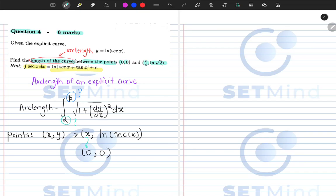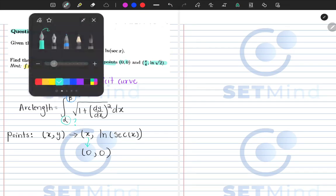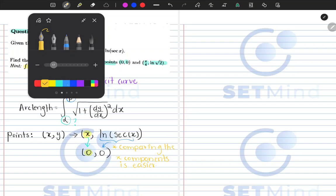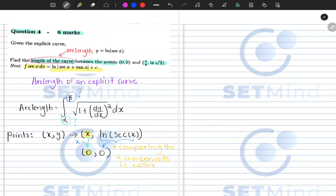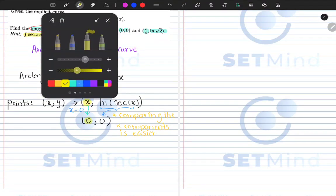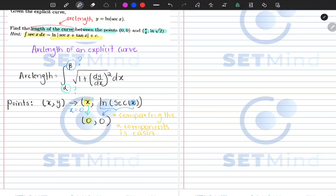When I look at the points, one of them is (0,0). I should ask myself what did I do to the x for me to move from x to 0, and what did I do to the y component? The x part is the easy comparison. Comparing the x components is easier. What you must have done to x for you to move down to 0, you must have just equated your x to 0. Let's confirm: if you put 0 here, sec of 0 gives us 1, and ln of 1 is 0. So that confirms your answer.